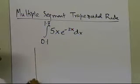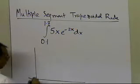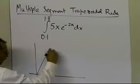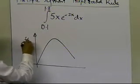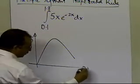And if we were going to use one segment trapezoidal rule, I'm going to show you graphically what it would look like, so your 5x e to the power minus 2x is going to look like that, as a function of x.